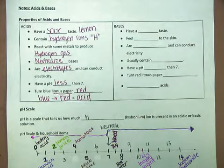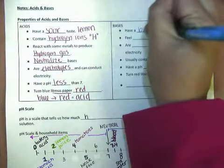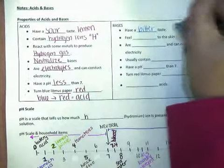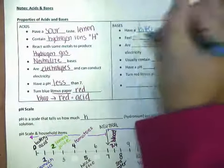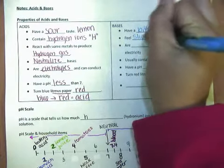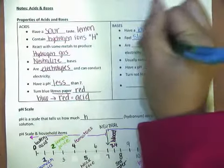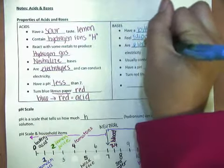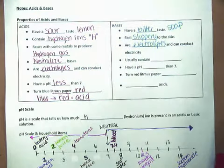Bases have the opposite characteristics. Bases have a bitter taste. Usually something like soap is a base. They feel slippery to the skin. They are also electrolytes and can conduct electricity.